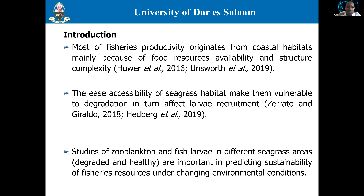There is strong and growing evidence that these coastal ecosystems are declining, mainly due to anthropogenic stressors and natural disasters. The spatial extent of these coastal habitats makes them vulnerable to degradation, especially illegal fishing activities conducted in different coastal areas, which affects the recruitment of fish larvae and overall fisheries productivity.